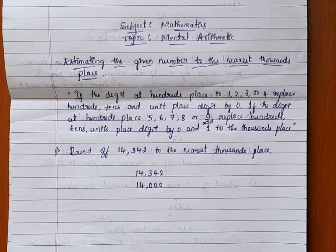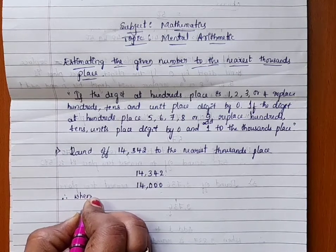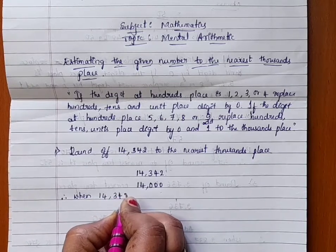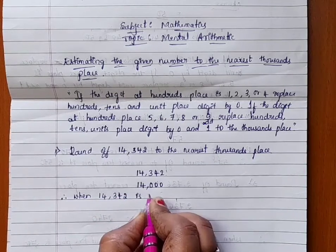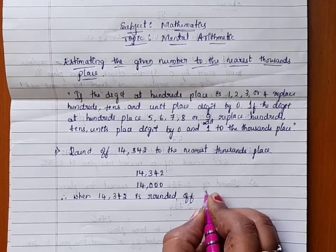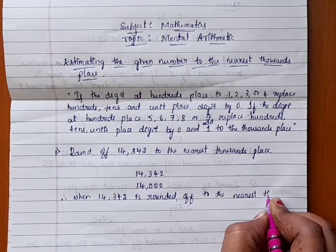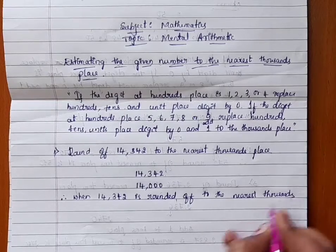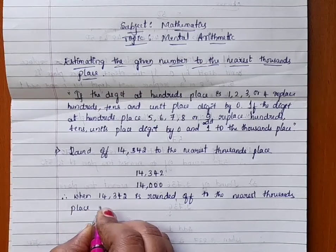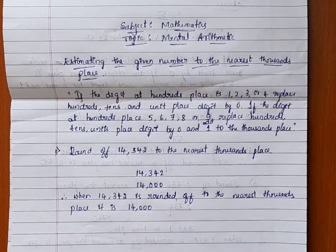Leave the thousands place unchanged. Therefore, when 14,342 is rounded off to the nearest thousands place, it is 14,000.